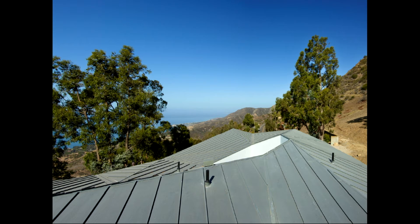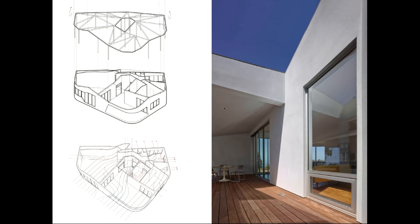Natural cooling is achieved throughout using several strategies. Apertures are placed to take advantage of prevailing winds. The courtyard is a literal vortex of air circulation, drawing hot air in and out its top. The patio cover shades south-facing windows.